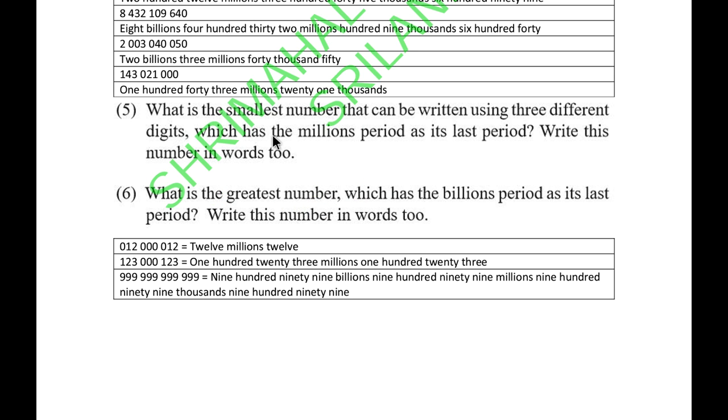Question 5: What is the smallest number that can be written using three different digits which has the millions period as its last period? Write this number in words too. I believe that's 12 million and 12. They say the millions period is 12 and the units place is also 12.